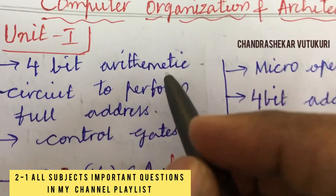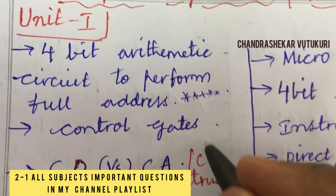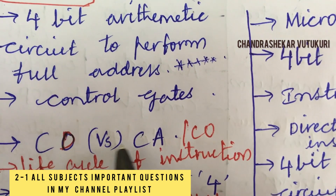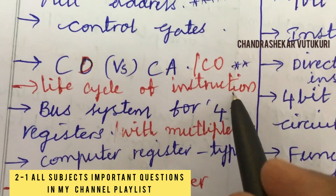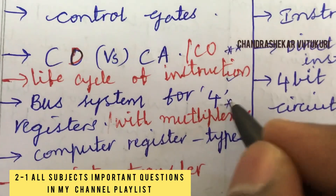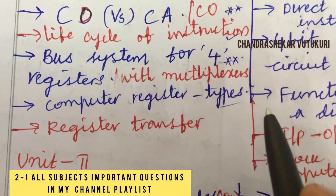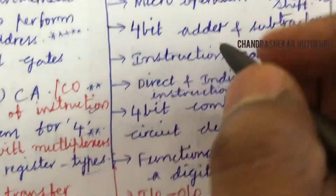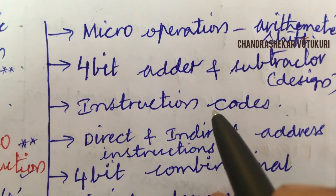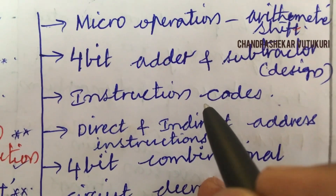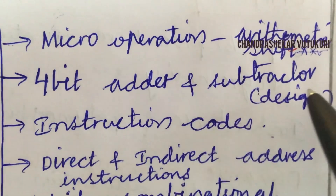The first gunshot question for Unit 1 is a 4-bit arithmetic circuit to perform full adder arithmetic operations for given values. Define control gates and the difference between computer organization and computer architecture. The lifecycle of instruction and the bus system for a 4-register with multiplexer is a top question for 2A. The 4-bit arithmetic operation may be the B question. Computer registers and their types, and register transfer, may be short questions. Micro-operations of arithmetic shift along with problems and the 4-bit adder and subtractor design are top questions for 3A.